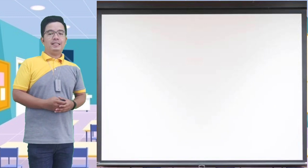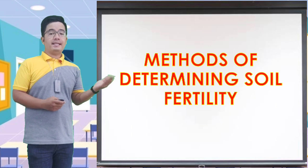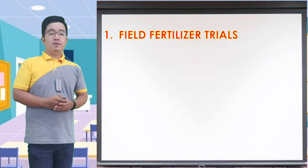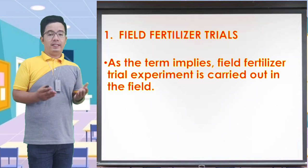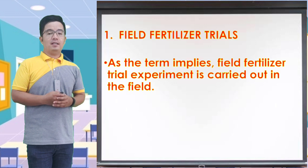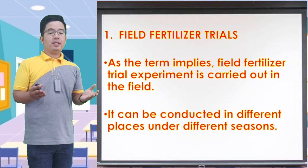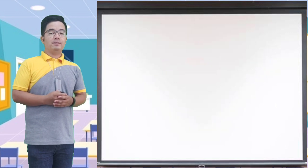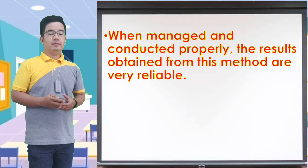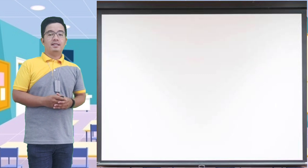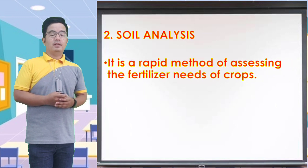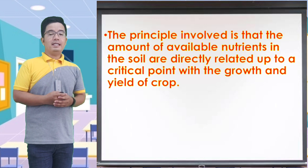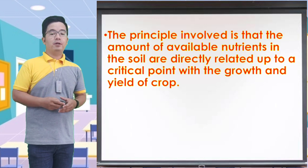Methods of determining soil fertility. First, field fertilizer trials. As the term implies, a field fertilizer trial experiment is carried out in the field. It can be conducted in different places under different seasons. When managed and conducted properly, the results obtained from this method are very reliable. Number two, soil analysis — a rapid method of assessing the fertilizer needs of crops. The principle involved is that the amount of available nutrients in the soil are directly related, up to a critical point, with the growth and yield of crops.